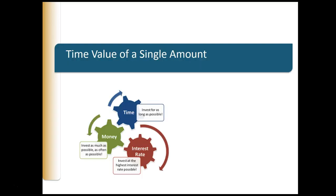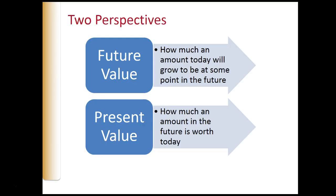Now we're going to talk about the time value of a single amount. To better help you understand how compound interest affects the time value of money, we'll examine this topic from two different perspectives. First, we'll calculate how much an amount today will grow to be at some point in the future, which is called a future value. Then we'll take the opposite perspective and examine how much an amount in the future is worth today — its present value.